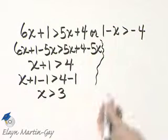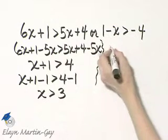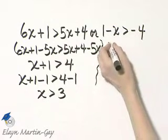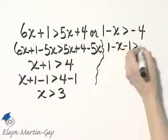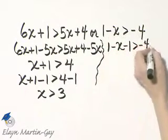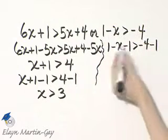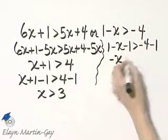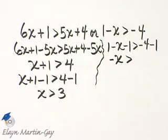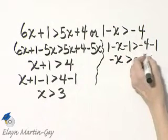Now let's solve the second inequality. I will subtract 1 from both sides. So I'll have 1 minus x minus 1 is greater than negative 4 minus 1. 1 minus 1 is 0. Don't forget though, you have negative x is greater than negative 4 minus 1. That's negative 5.